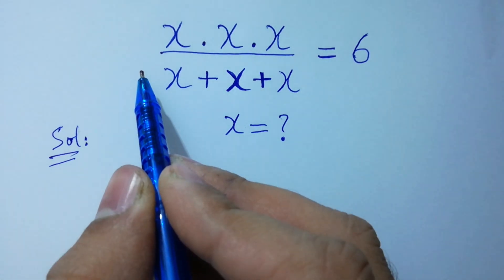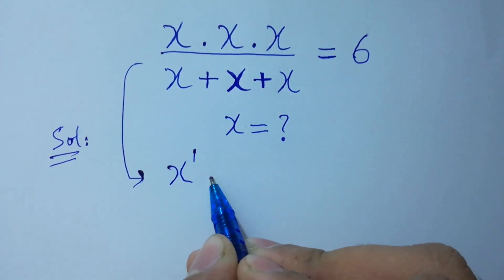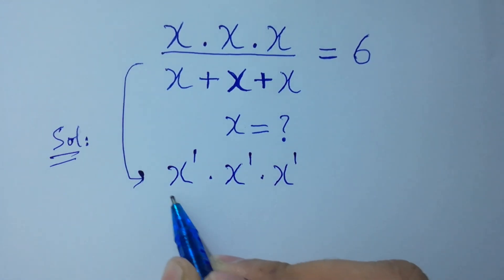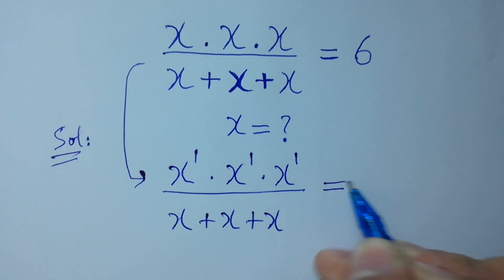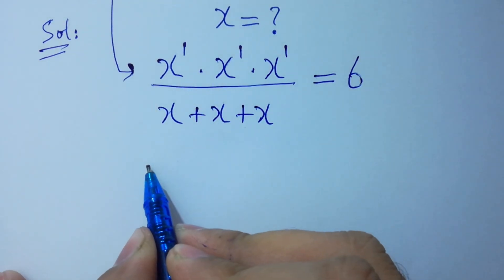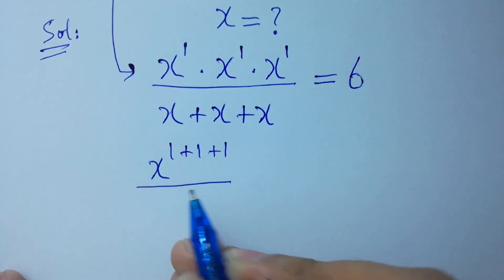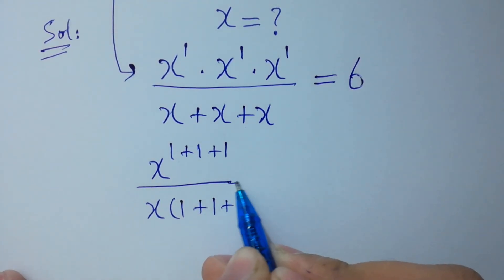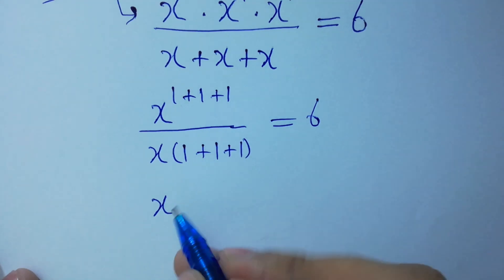In fact, this is x to the power 1 times x to the power 1 times x to the power 1 over x plus x plus x equals 6. Since the base is the same, we add the powers: x to the power 1 plus 1 plus 1 over x common, we have 1 plus 1 plus 1.